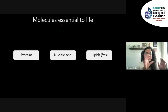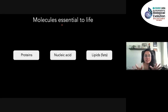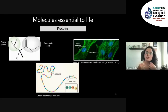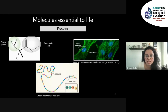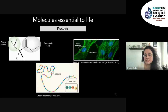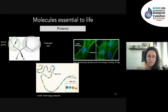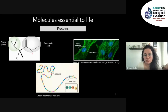A lot of molecules are essential to keeping us alive, and we can separate them as proteins, nucleic acids, and lipids. Proteins carry out many functions — they catalyze metabolic reactions and give structure to cells, such as the protein filaments of the cytoskeleton. Proteins are made up of amino acid groups: amino groups and carboxylic acid groups. When multiple amino acids are linked together, you get a protein.